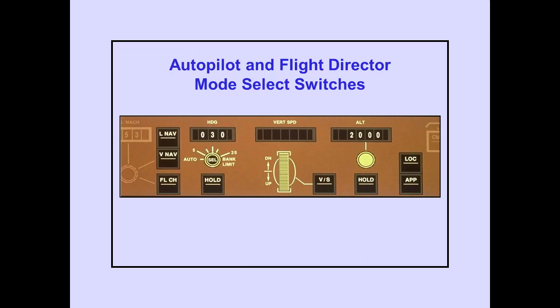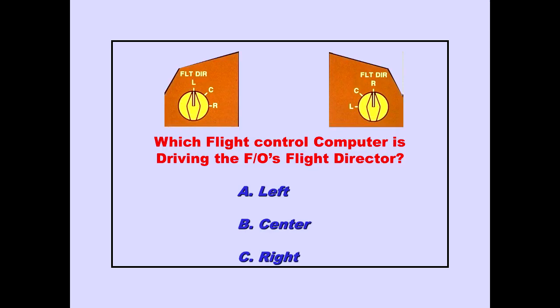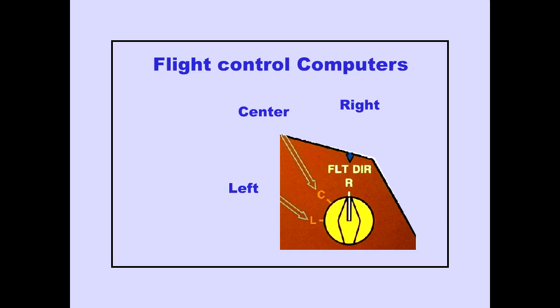These mode select switches control the autopilot and flight director operations. The source selector determines which flight control computer operates the flight director. Since the first officer's selector is positioned right, the right flight control computer is driving the first officer's flight director.